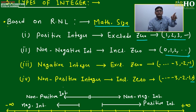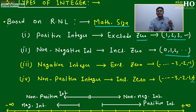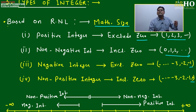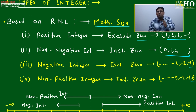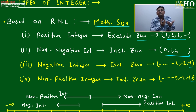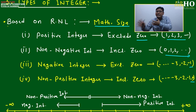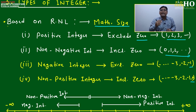Based on this property — using the real number line or mathematical sign — counting-of-solutions type problems will come. For example, given an equation, how many values of x will satisfy it? They are not asking for the exact value of x, but how many different values x can take — that count you have to find.